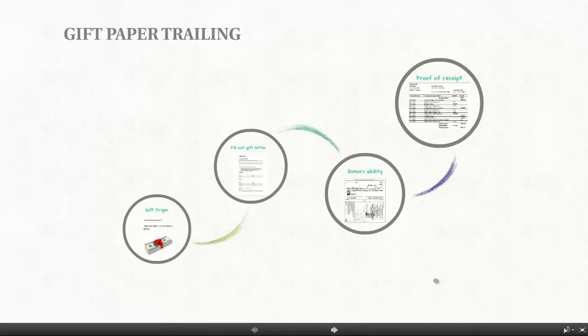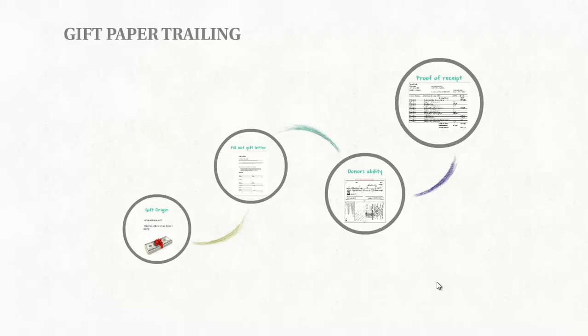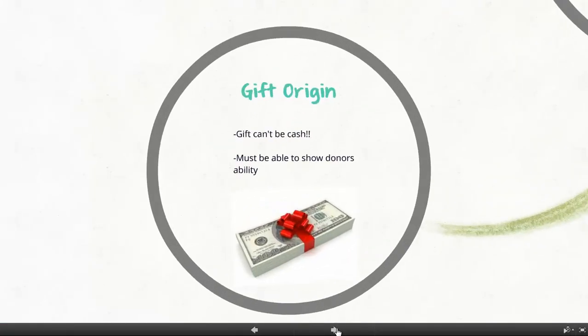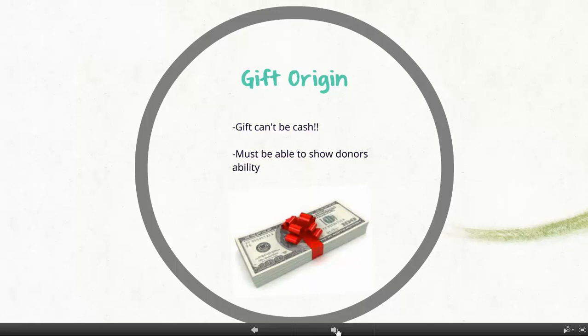Manny Gomes here, and in this video we're going to explain the proper way to document a gift. Gifts can only be given by either a family member or close personal friend. Now if you are receiving a gift from a friend, please do give me a call, as there's a proper way we need to document the relationship. As you can see here, there's a little cash — a stack of cash tied with a little bow.